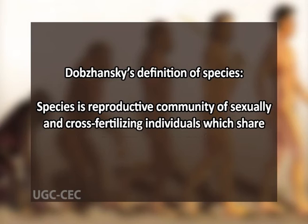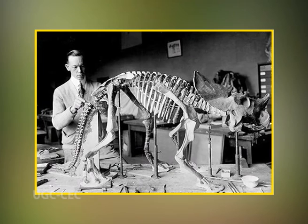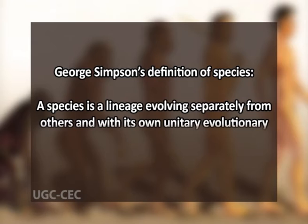Dobzhansky, being an evolutionary geneticist, added the term gene pool and defined species as a reproductive community of sexually cross-fertilizing individuals which share a common gene pool. Lastly, the evolutionary species concept: because of the non-dimensional character of the biological species concept, some paleontologists argued that the species definition must involve evolutionary criteria. Simpson proposed the evolutionary species concept, defining species as a lineage evolving separately from others and with its own unitary evolutionary role and tendencies. Mayr criticized this definition, saying it is the definition of a phyletic lineage but not of a species.